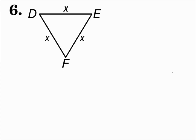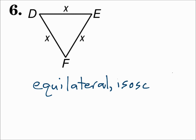Number six, all sides are congruent, so it's equilateral. And since at least two sides are congruent, it's also isosceles. Remember, equilateral triangles are always isosceles. Scalene triangles have all sides of different lengths. Isosceles triangles have at least two sides congruent, and equilateral triangles have all three sides congruent.